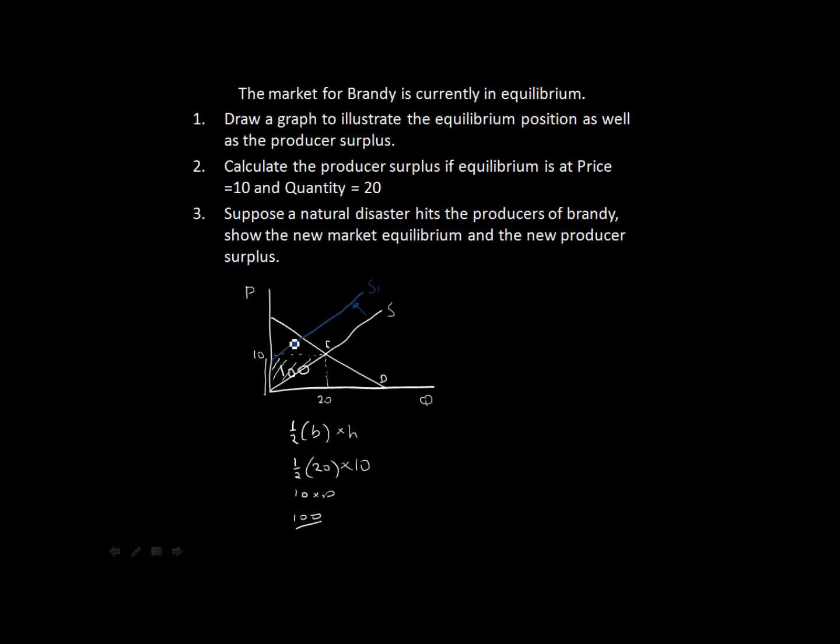So we can see that we now have a new equilibrium at this point. So we'll call it E1. And we can just illustrate where equilibrium price and quantity is going to be.